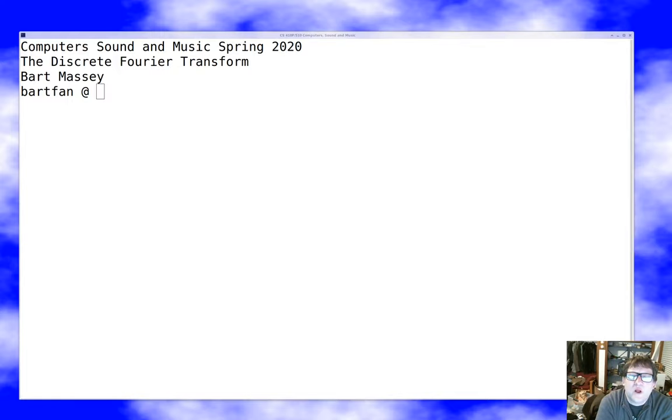Hello, everybody. I'm Bart Massey. Welcome to Computer Sound and Music. Today we're going to be talking about the discrete Fourier transform. This is a continuation of the last lecture where we talked about the continuous Fourier transform. This is one of the cornerstones of audio signal processing. On the other hand, it's also kind of some fiddly math. This will be a short lecture, but it'll be kind of intense. Feel free to pause, look stuff up, go back, that kind of thing. Anyway, I hope everyone's doing well, and let's dive into this fancy topic.